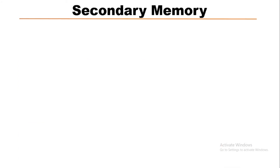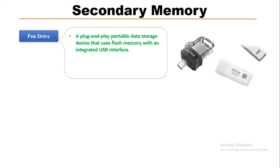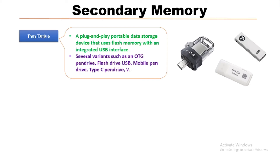Now we will know about the pen drive. It is a plug-and-play portable data storage device that uses flash memory with an integrated USB interface. These are the different types of pen drives, mainly developed by different companies. Pen drives come in several varieties such as OTG pen drive, flash drive, USB mobile pen drive, and Type-C pen drive.